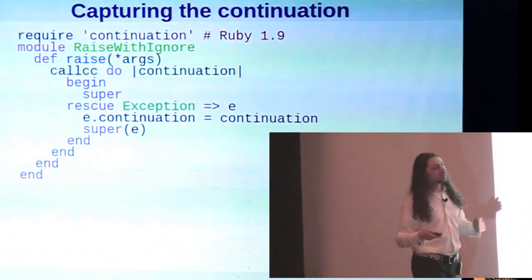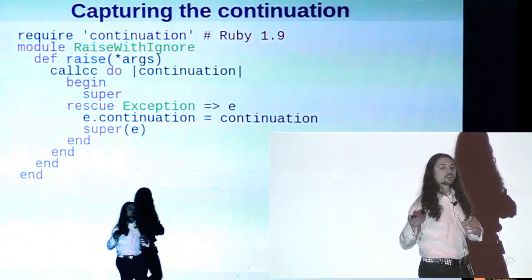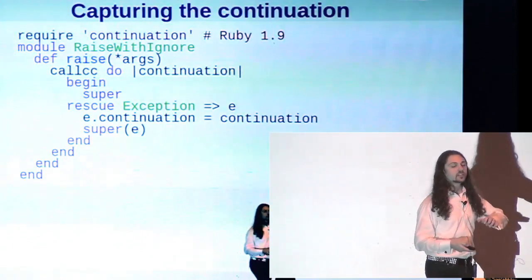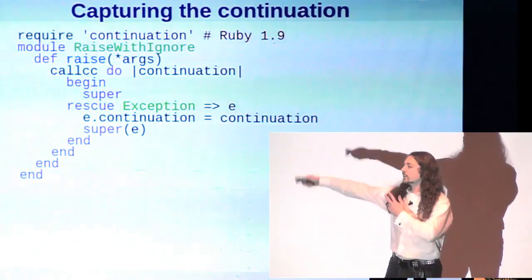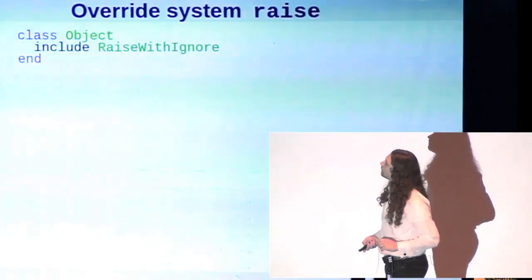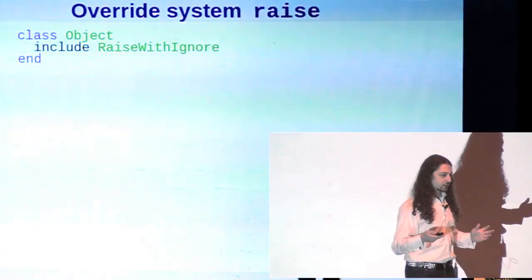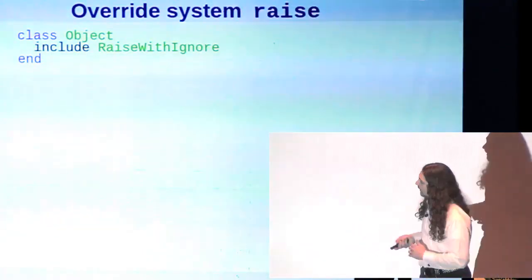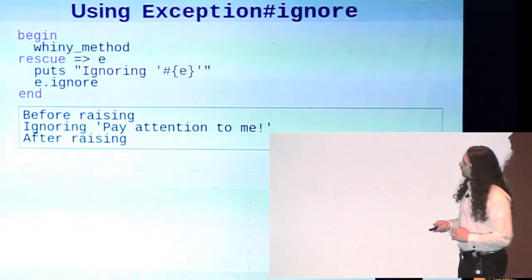And what we do inside that is we just, we delegate back to the original Ruby definition of raise and then we catch the exception that comes out. We tack on our continuation and then we let it continue. Then we just need to add this to objects so that this is now our default definition of raise.